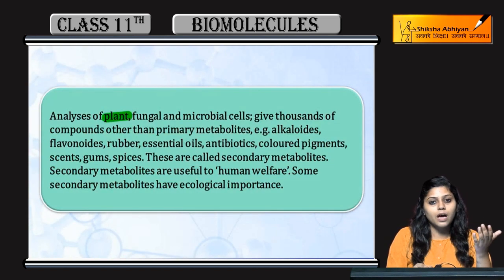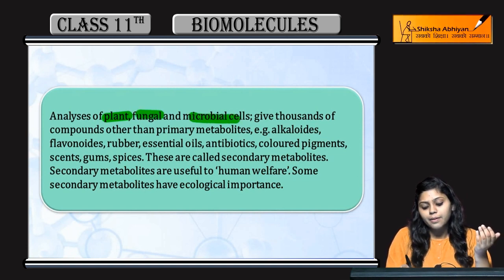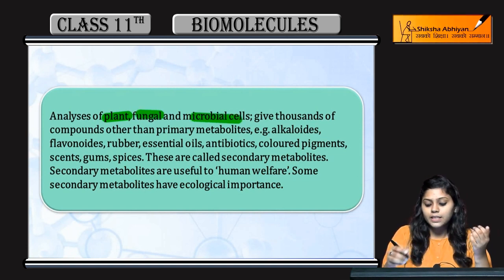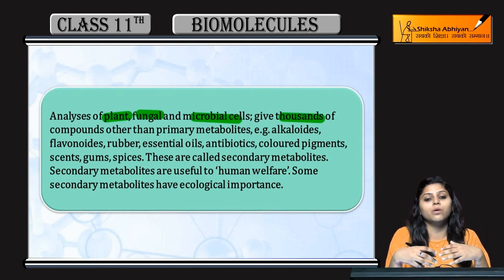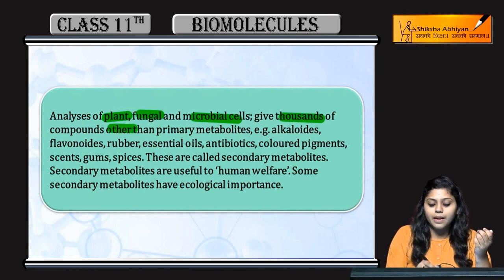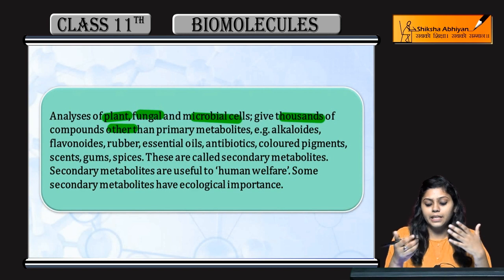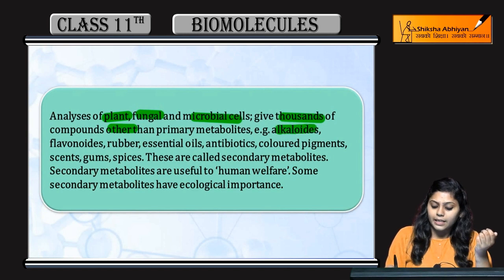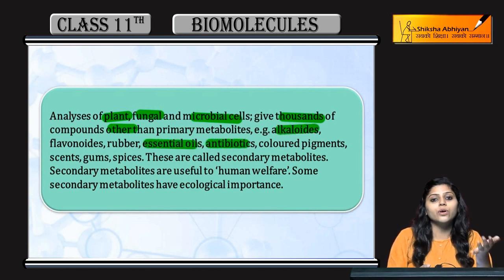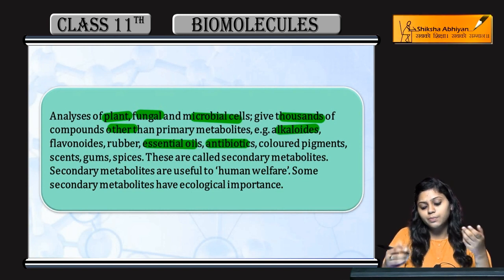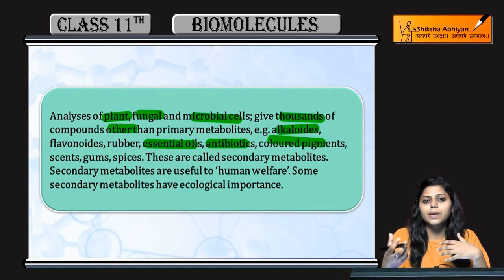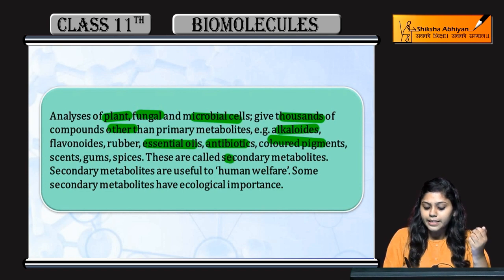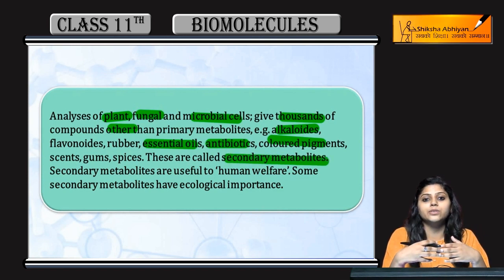Analysis of plant, fungi, and microbial cells reveals thousands of compounds other than primary metabolites. They might be alkaloids, antibiotics, some essential oils, flavonoids, rubbers, some colored pigments, scents, gums, or spices. These are secondary metabolites.